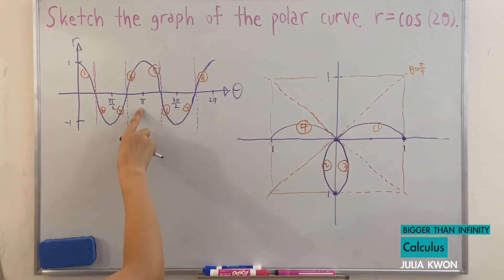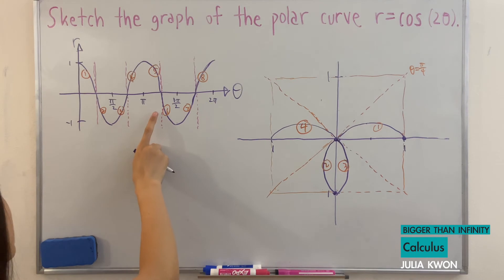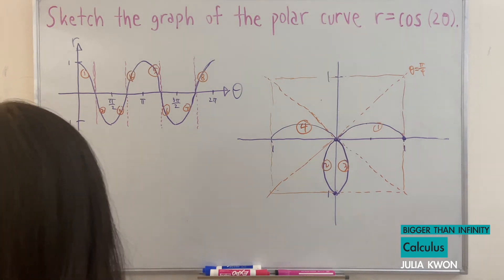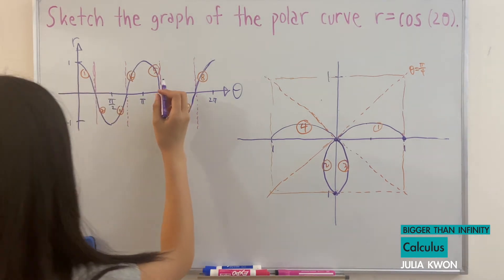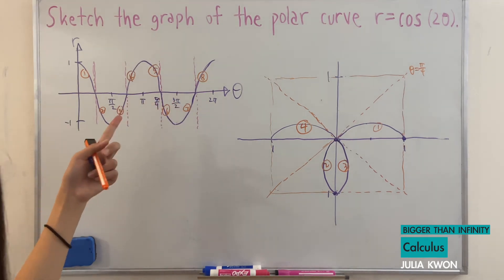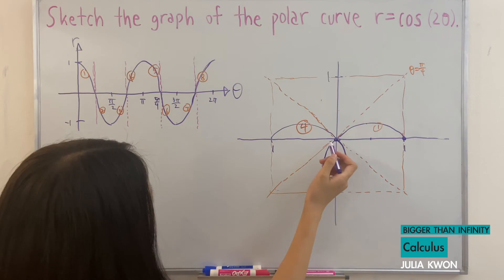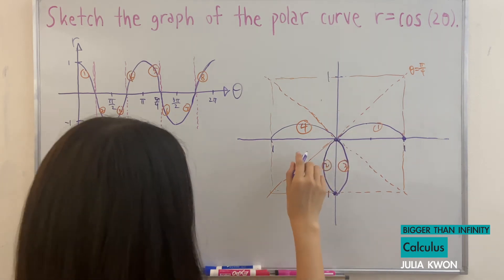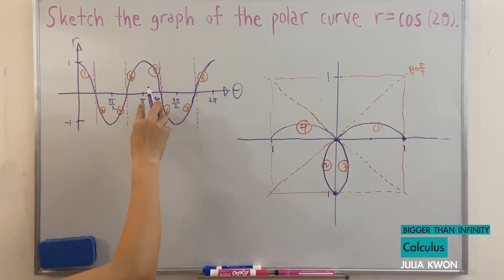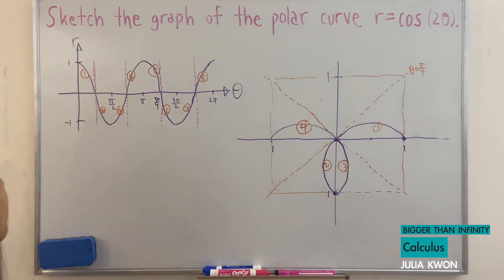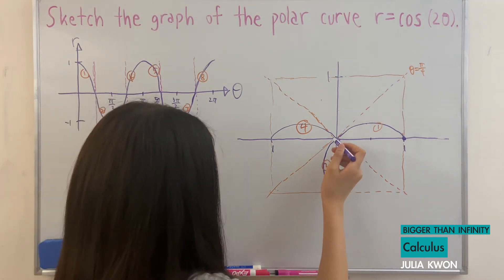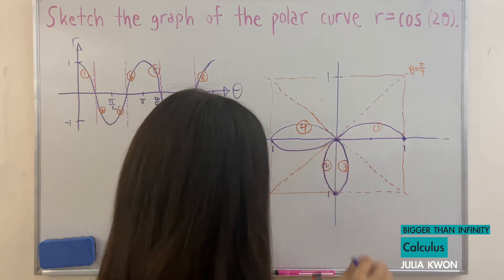For the fifth curve, theta is equal to pi to five pi over four. Five pi over four is here, and we're going to be working on this side. The radius is getting smaller and approaching zero as theta gets larger and approaches five pi over four. So our fifth curve would look something like this.